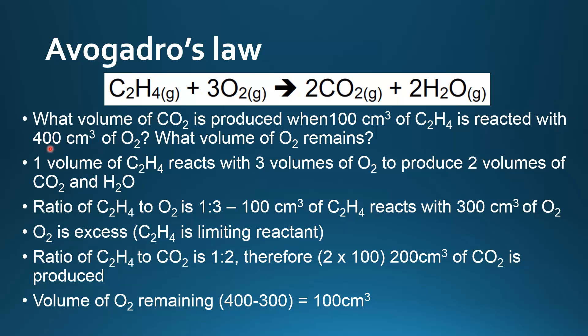To find how much O₂ is left over: we started with 400 centimetres cubed of O₂ and used 300 centimetres cubed of oxygen to react with the ethene, so that leaves us with 100 centimetres cubed of oxygen remaining.